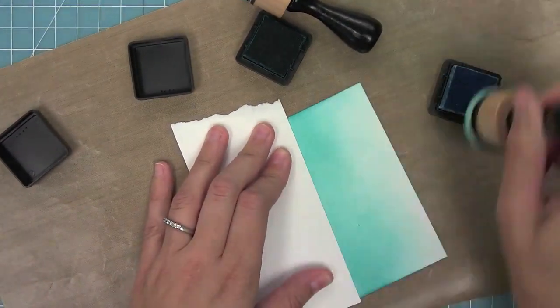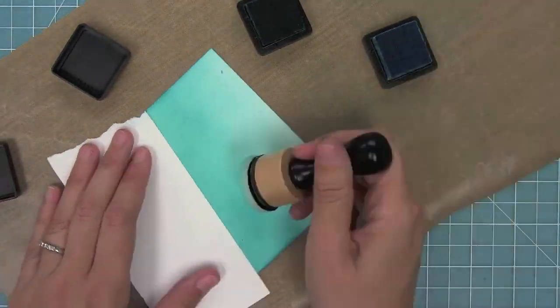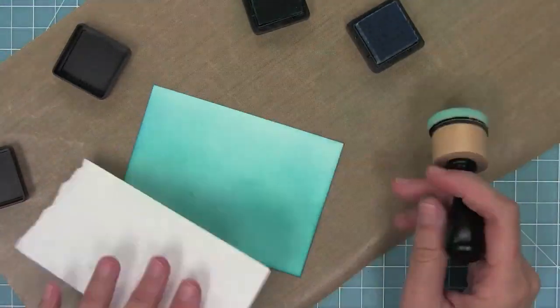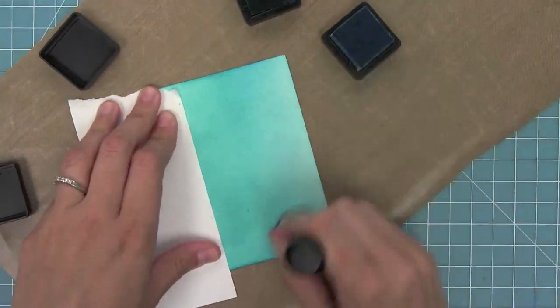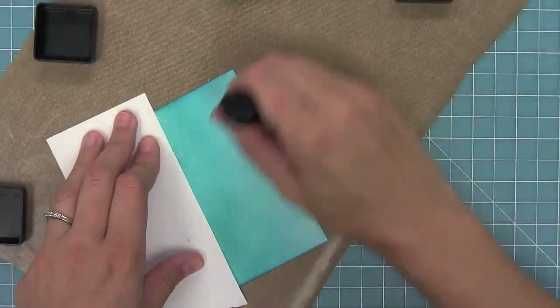Now to get the ombre effect, I'm going to switch to tumbled glass, a lighter color, and blend those two together. I'm going to switch between the two colors to make sure that the edge between them is nice and blended. I just love how these two colors look together.